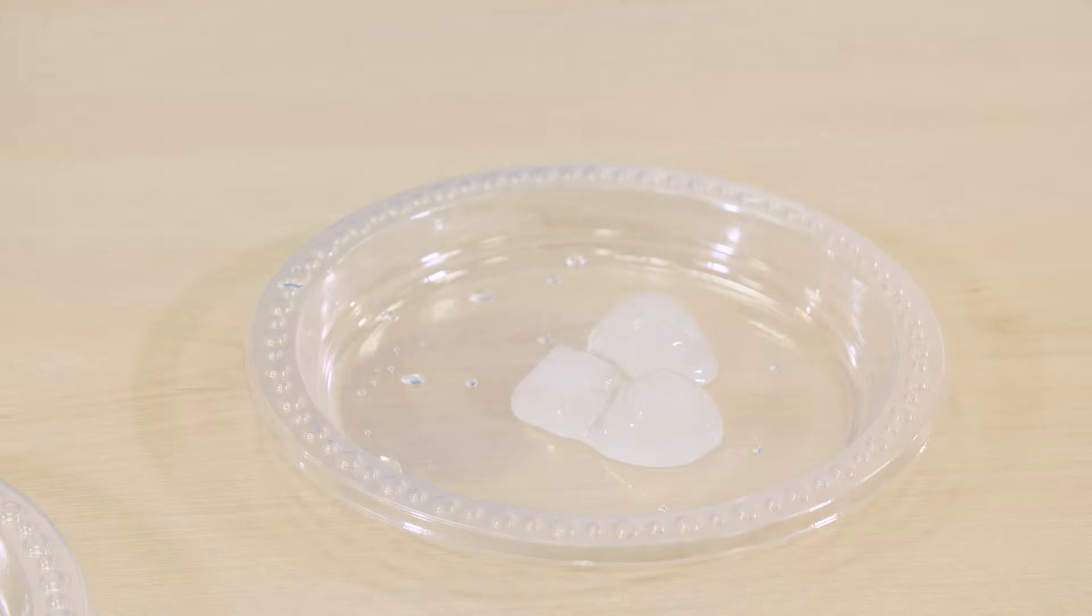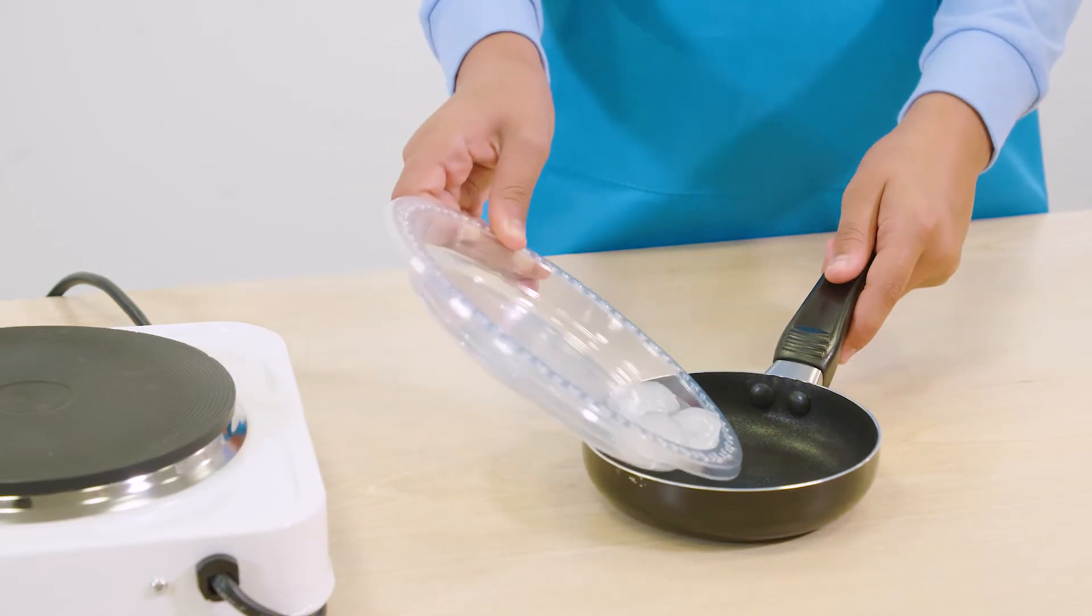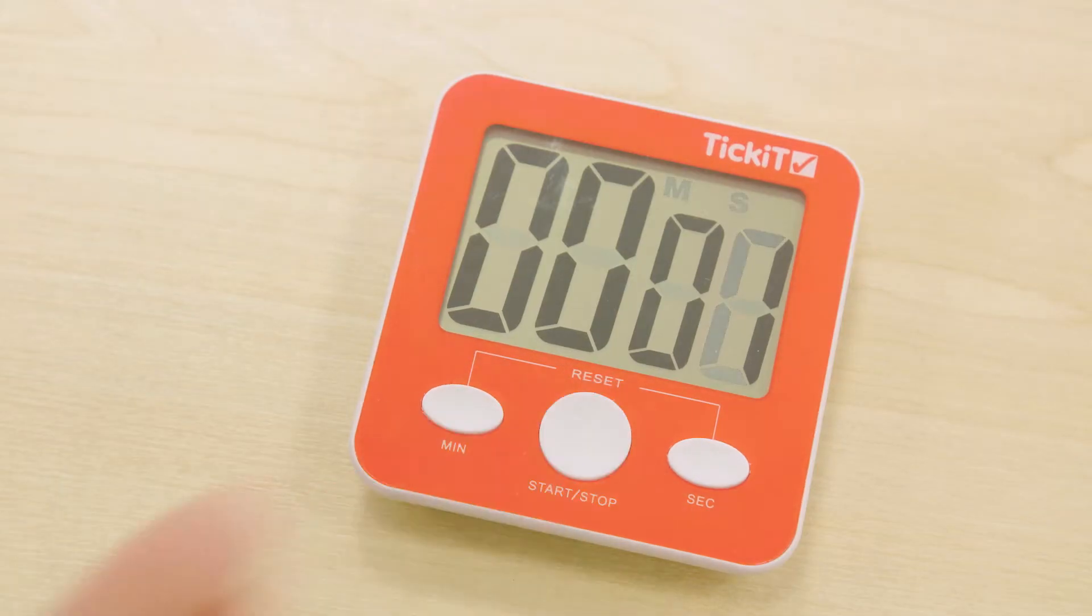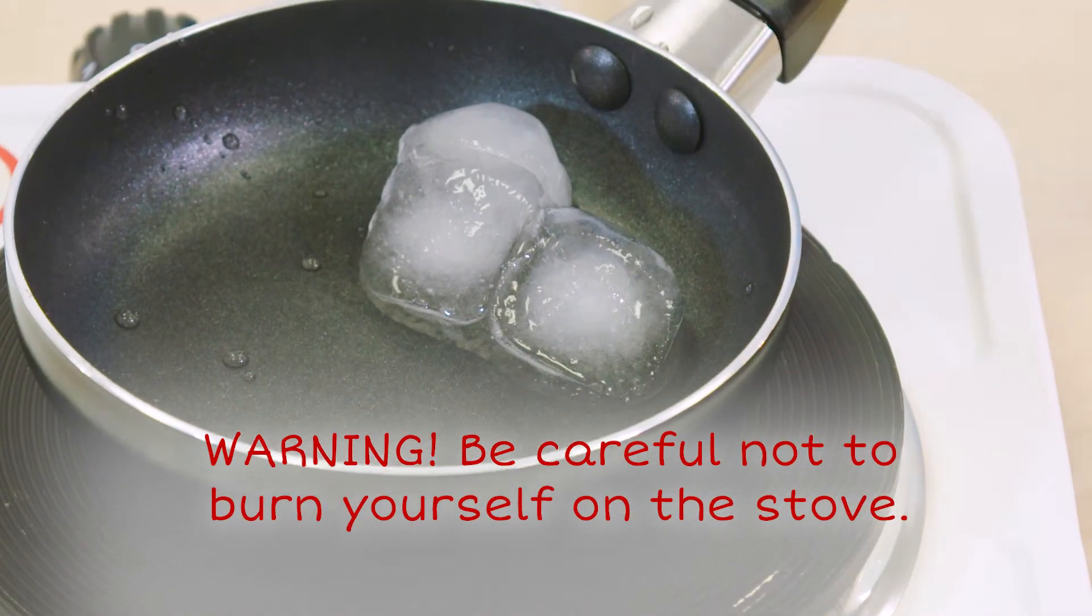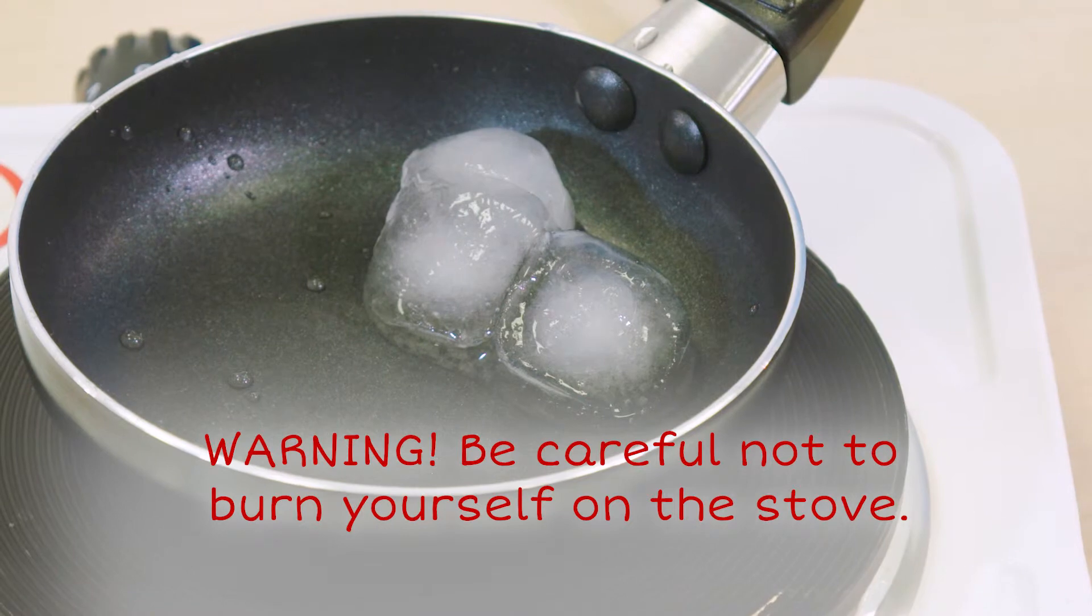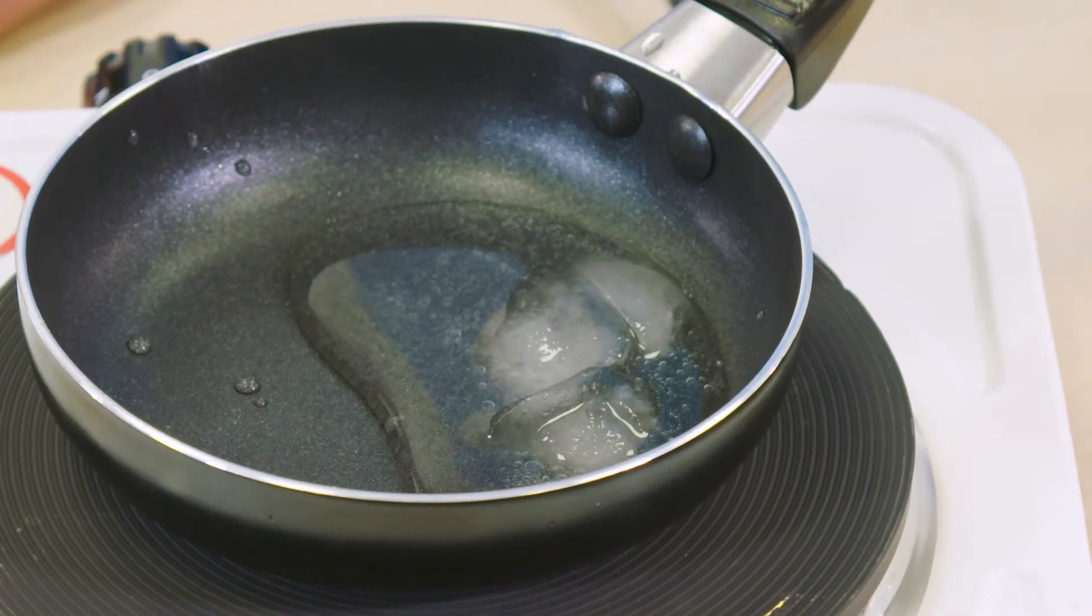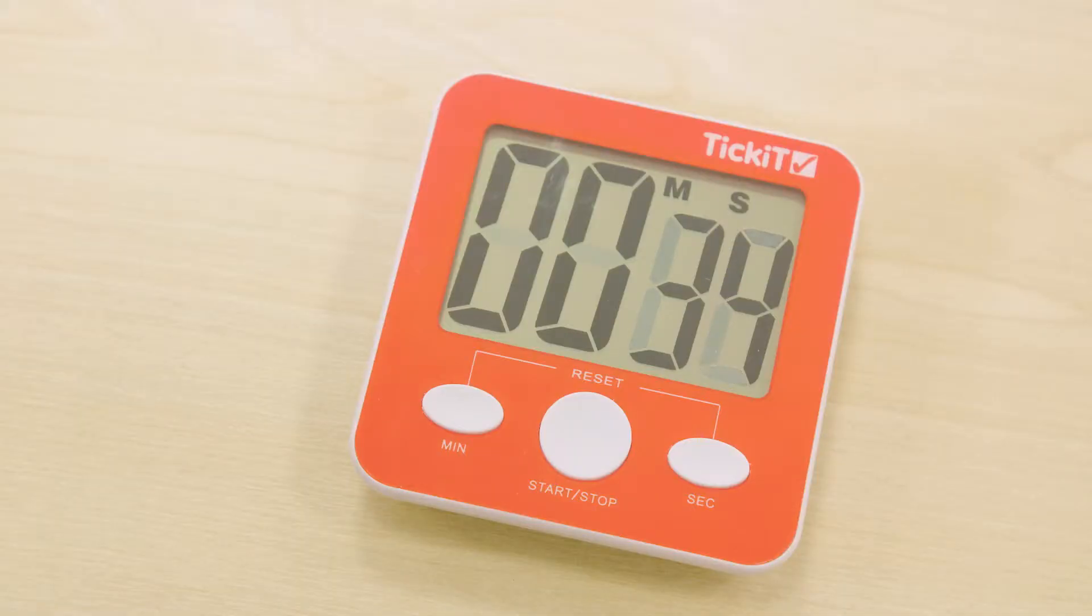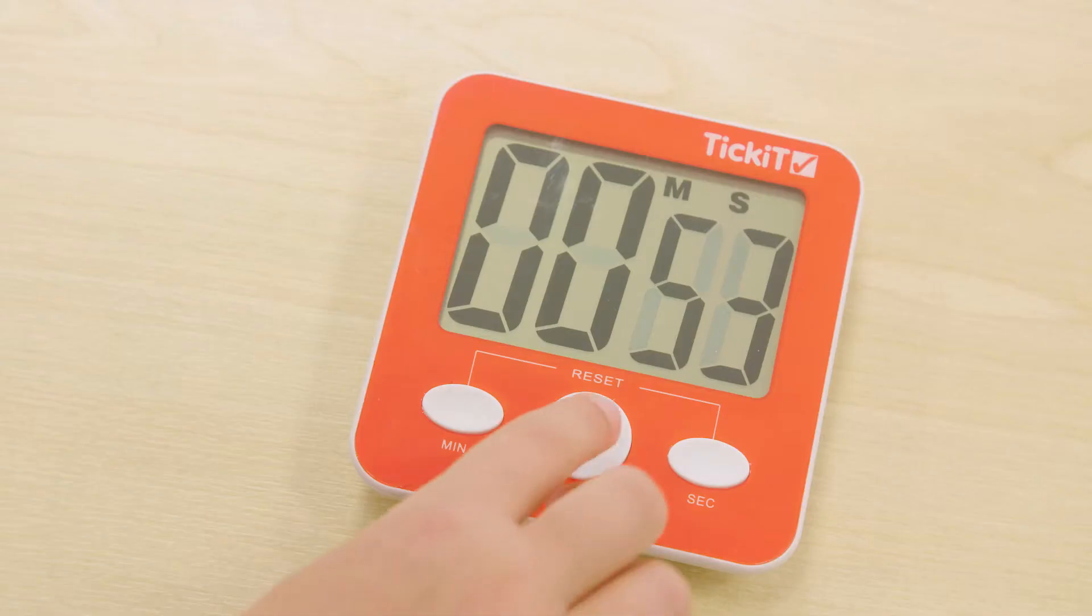Our investigators are going to test melting the ice cube. One of them has put the ice cube in the pan, and the other is timing how long it takes to melt. The ice cubes have started to melt already. Look, the ice cubes have completely melted. It's 54 seconds. I'll record the time.